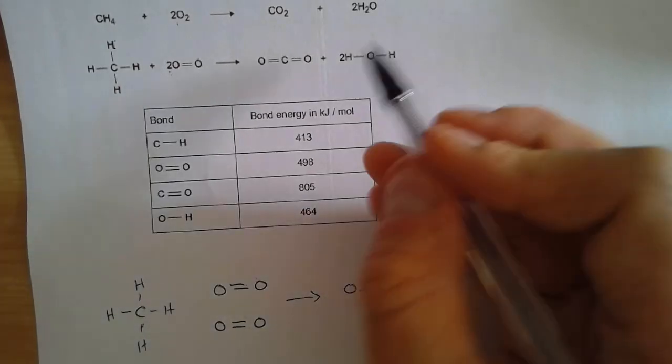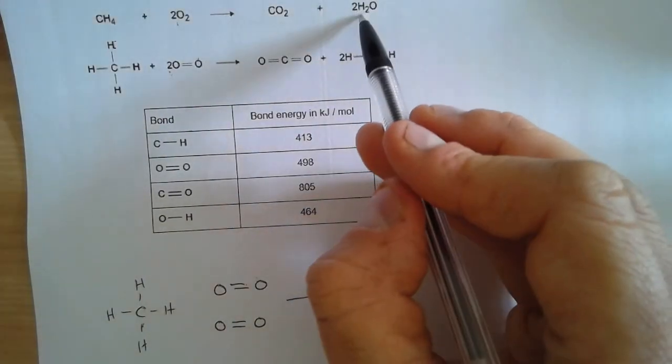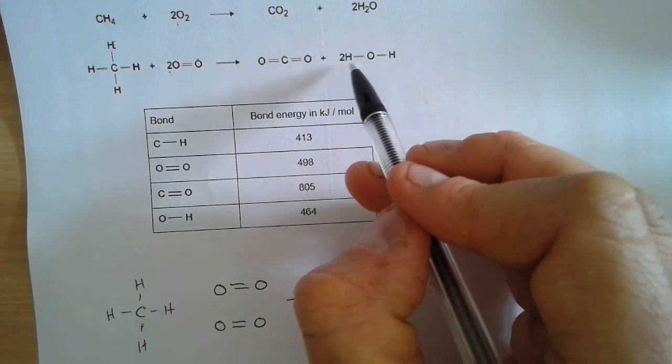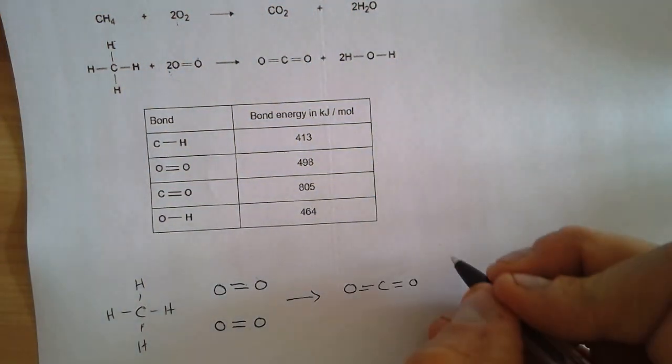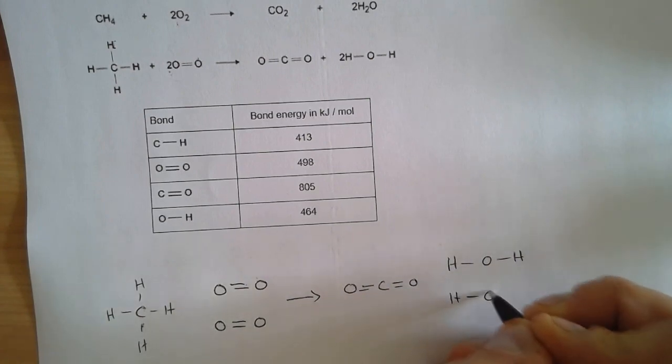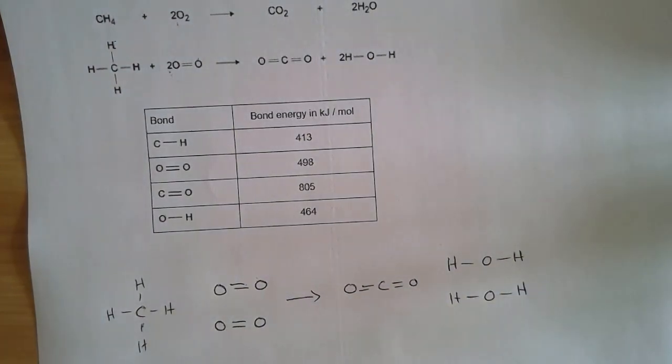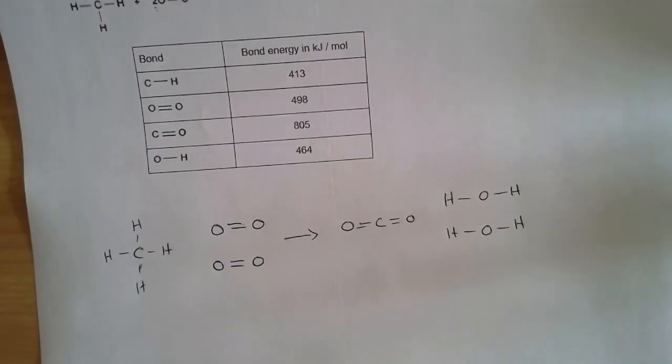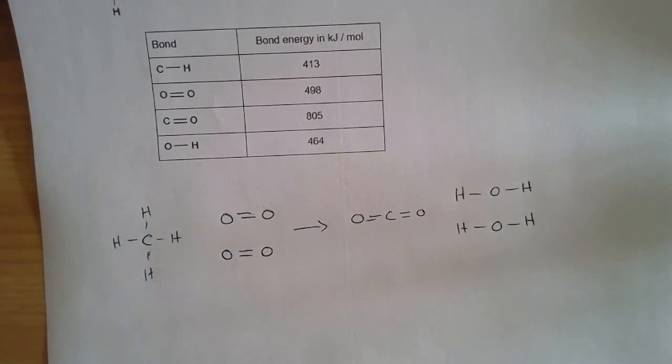And then we've got our carbon dioxide molecule and then we've got two water molecules, so we've got a two there and we've got two H2Os here. So I'm going to draw this one out fully again, this just makes it a little bit easier for us to understand what's going on. So having done that, we can then think about doing the calculation.